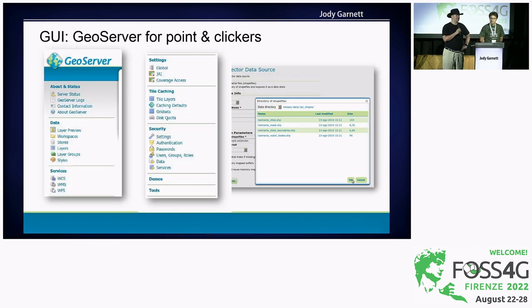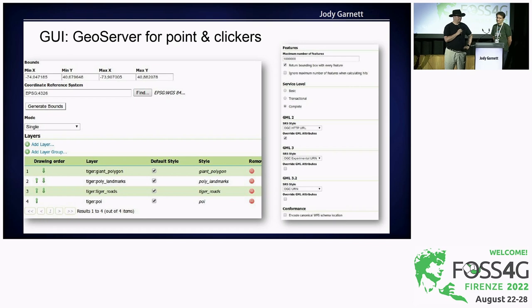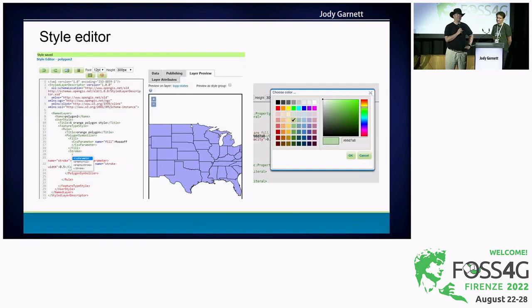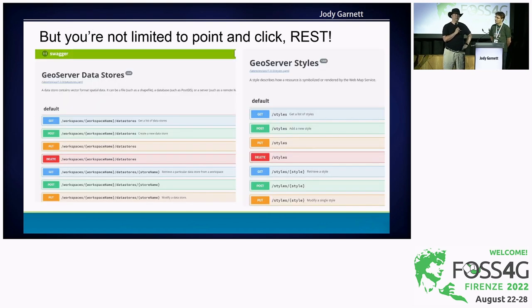One of the most popular things about GeoServer is that you can actually configure it — you don't have to wander into XML files like the bad old days. There's a UI, and you can poke away and stuff happens. We're publishing layers. One thing that's really nice is that there's an interactive style editor, so you can actually see the style on the screen, change settings and fonts, and get interactive feedback. But you're not limited to just point and click — there's also a REST API if you want to automate or make tools that configure GeoServer remotely.